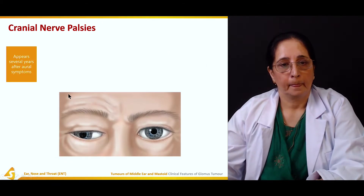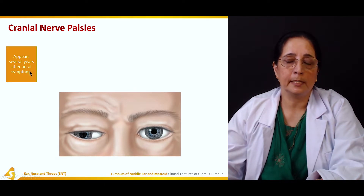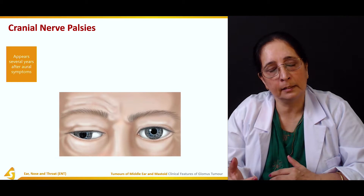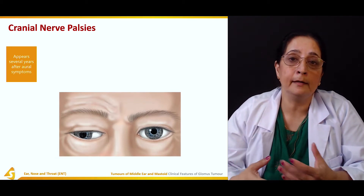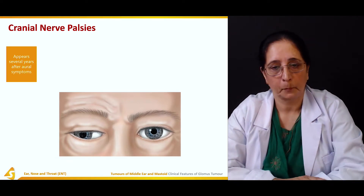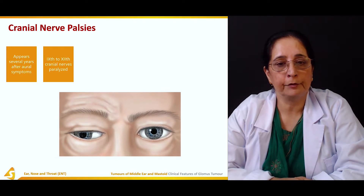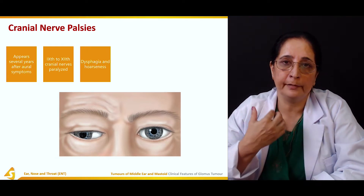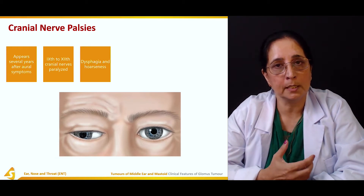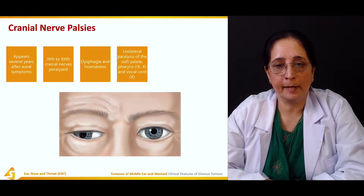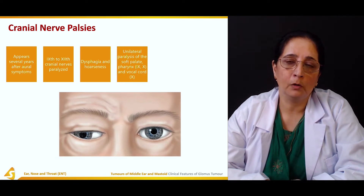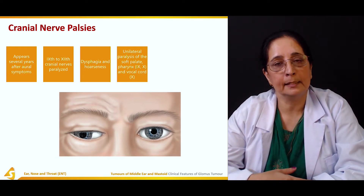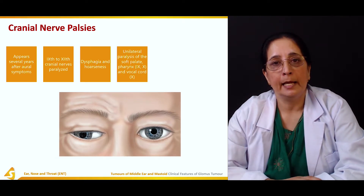Cranial nerve palsies appear several years after the aural symptoms. The 9th to 12th cranial nerves may be paralyzed. Dysphagia and hoarseness are present — dysphagia is difficulty in swallowing. There is unilateral paralysis of the soft palate, pharynx, and vocal cord. Vocal cord paralysis leads to hoarseness, while paralysis of the soft palate and pharynx leads to dysphagia.